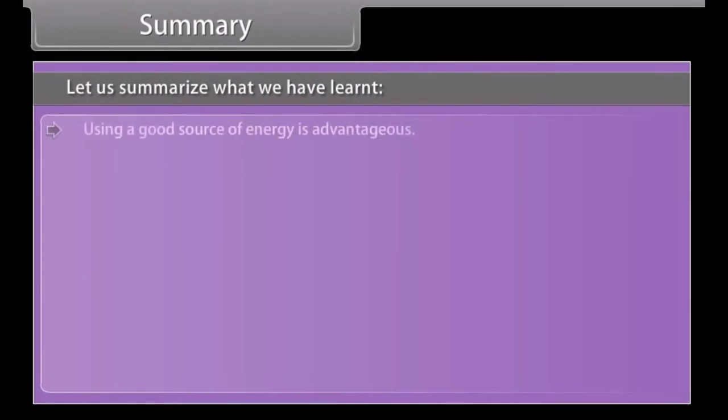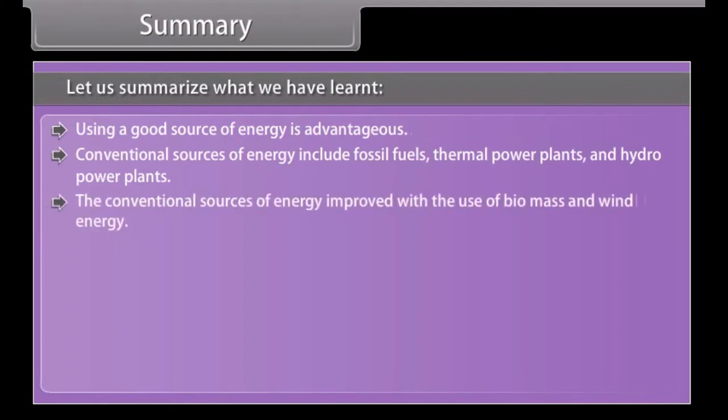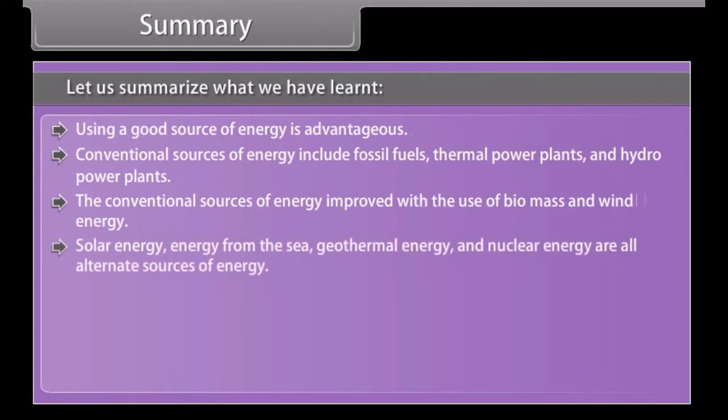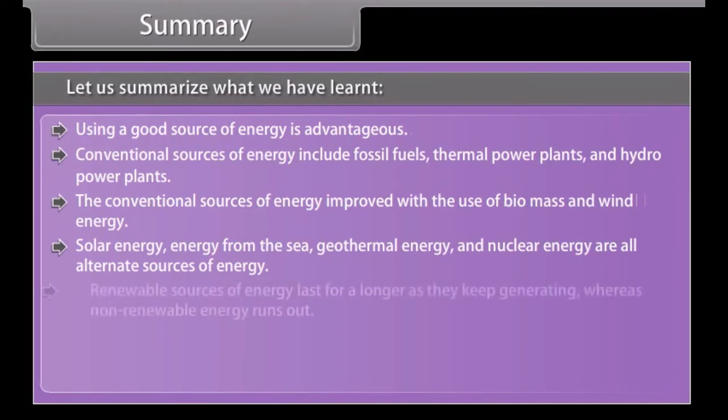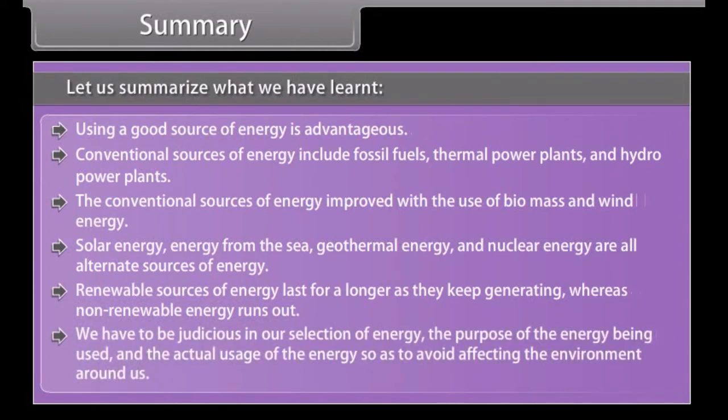Summary. Let us summarize what we have learnt. Using a good source of energy is advantageous. Conventional sources of energy include fossil fuels, thermal power plants, and hydropower plants. The conventional sources of energy improved with the use of biomass and wind energy. Solar energy, energy from the sea, geothermal energy, and nuclear energy are all alternate sources of energy. Renewable sources of energy last for as long as they keep generating, whereas non-renewable energy runs out. We have to be judicious in our selection of energy, the purpose of the energy being used, and the actual usage of the energy, so as to avoid affecting the environment around us.